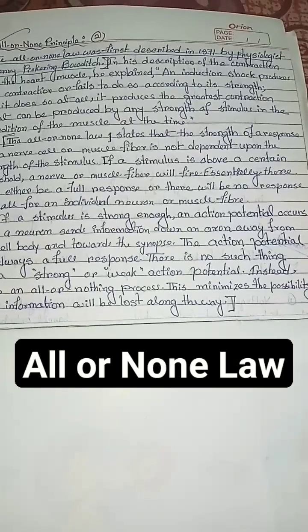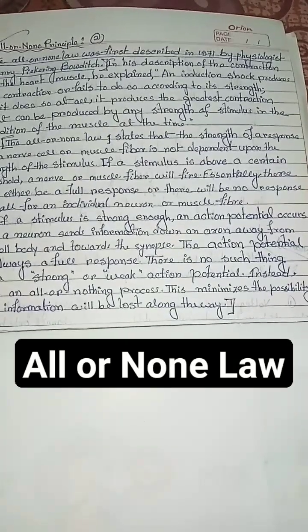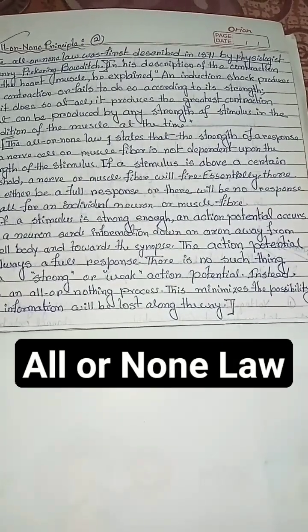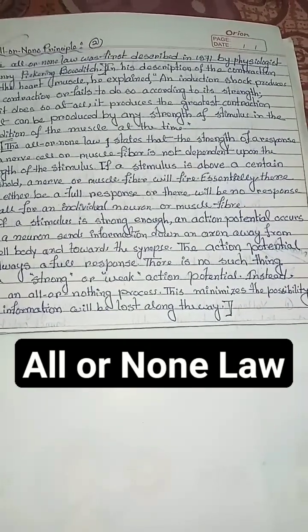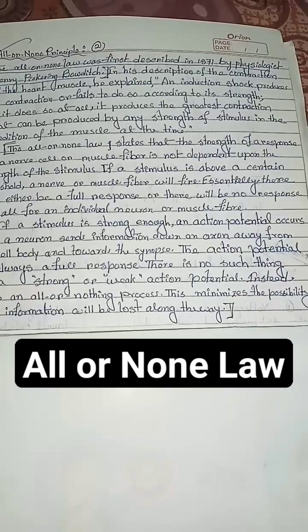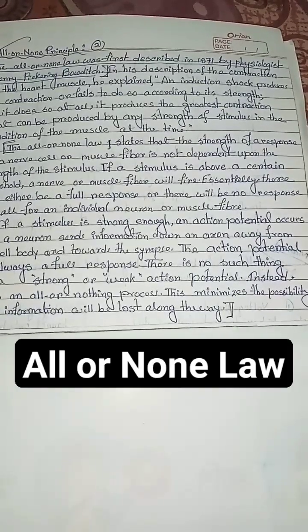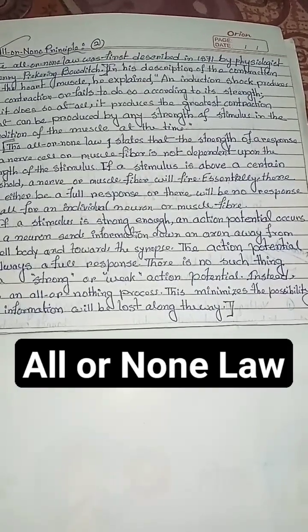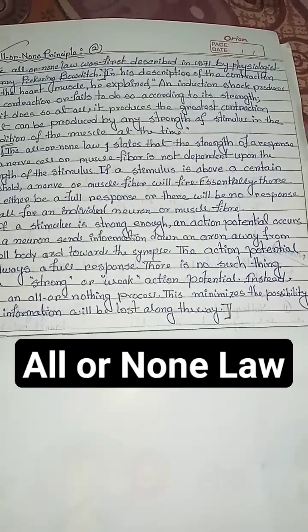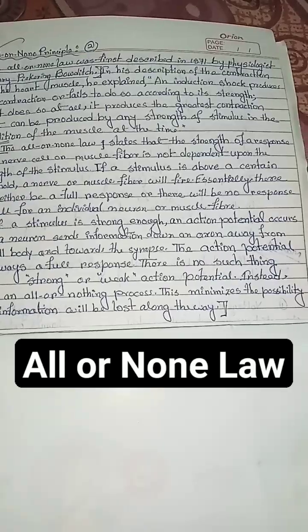If a stimulus is above a certain threshold, a nerve or muscle fiber will fire. Essentially, there will either be a full response or there will be no response at all, for an individual neuron or muscle fiber.